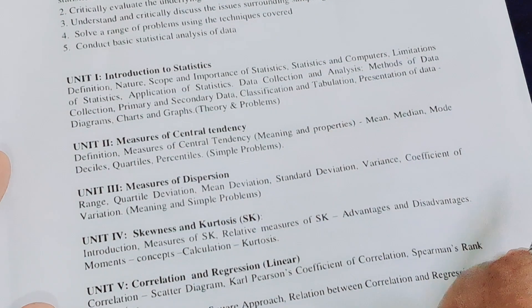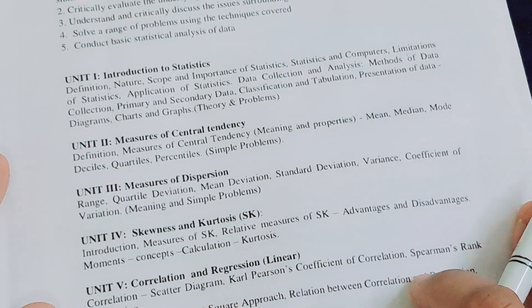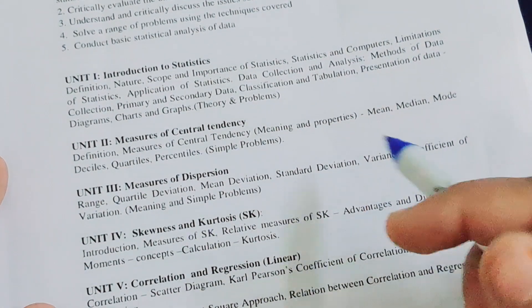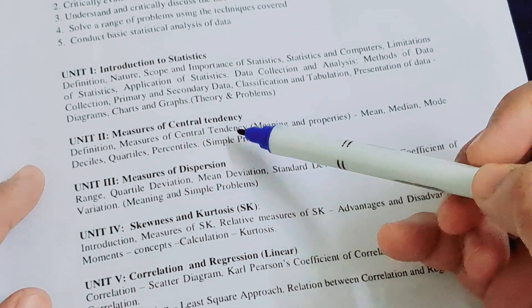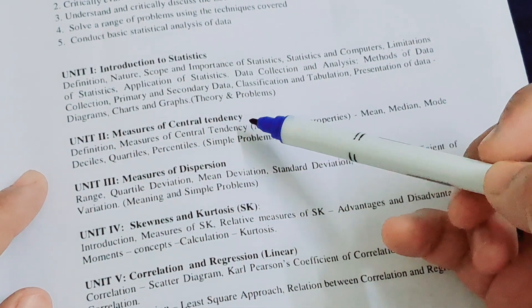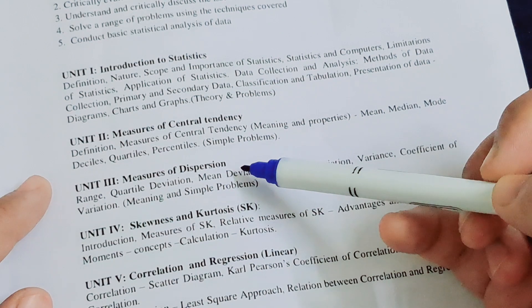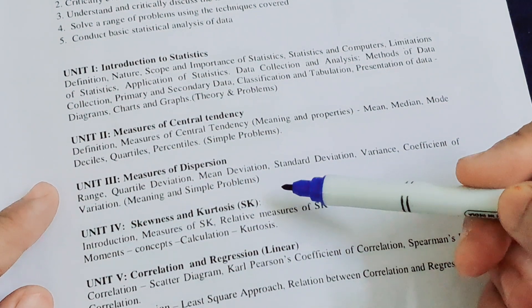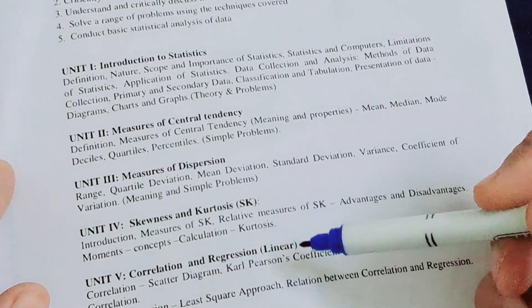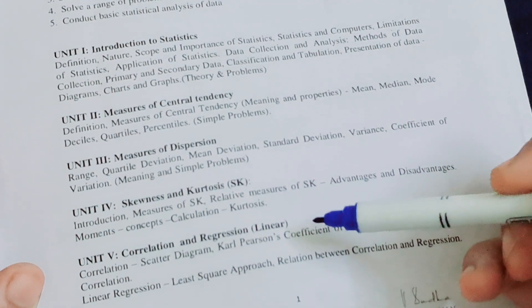In Business Statistics we have five units. Unit one is Introduction to Statistics, unit two is Measures of Central Tendency, unit three is Measures of Dispersion, unit four is Skewness and Kurtosis, and unit five is Correlation and Regression.